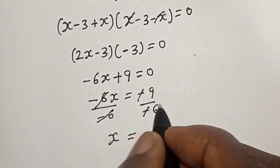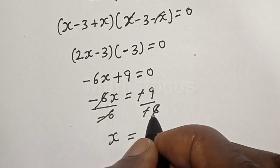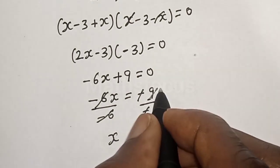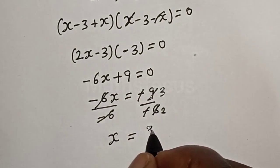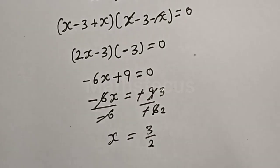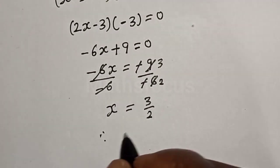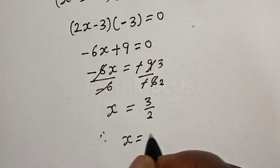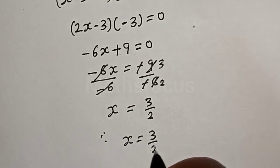This minus cancels this minus. 3 here, 3 here, 2, 3 over 2. Therefore our final answer is x is equal to 3 over 2.